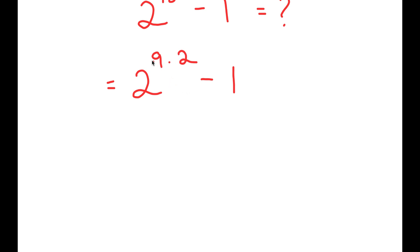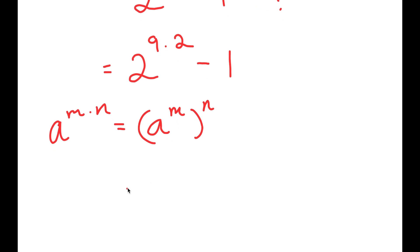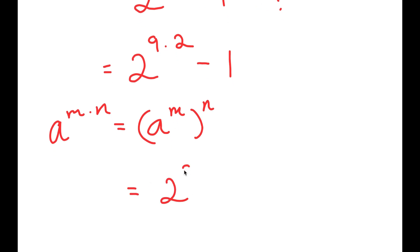And the reason I did that is because now I can use an exponential property that states that if I have something with form a to the power of m times n, this is equal to a to the power of m to the power of n. So 2 to the power of 9 times 2 is going to turn into 2 to the power of 9 to the power of 2.